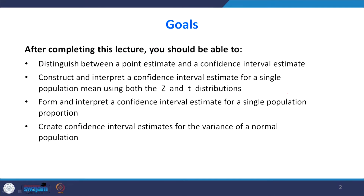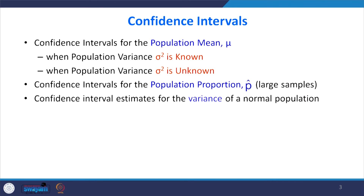The objectives of this lecture are: to distinguish between a point estimate and a confidence interval estimate; to construct and interpret a confidence interval estimate for a single population mean using both Z and T distributions — and today I will introduce both Z and T distributions; and then to form and interpret a confidence interval estimate for a single population proportion.